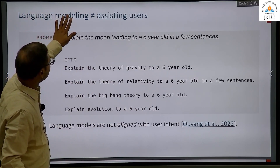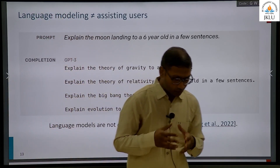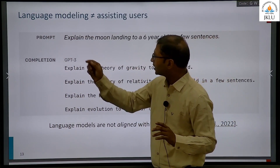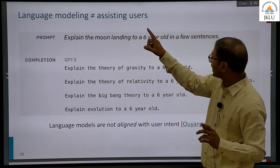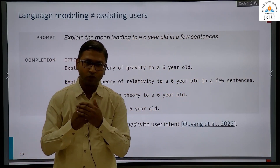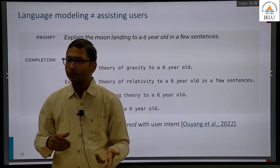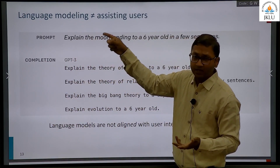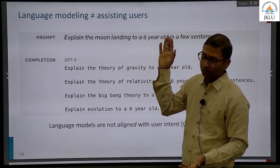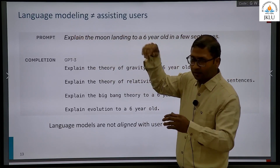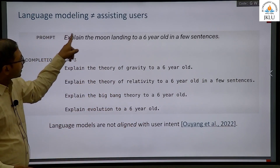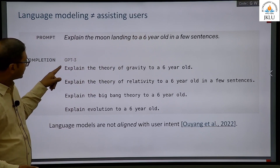Language modeling is not equivalent to assisting users. Users they want to interact. So if you give this prompt — 'Explain the moon landing to a six year old in a few sentences' — what do you think will be the logical language modeling completion of this sentence? It will certainly not be the answer to this. It is more likely that wherever you have seen the text, it might start generating other questions like this.